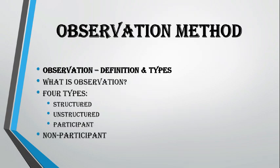Structured observation is a planned and systematic method. The researcher decides in advance what to observe, when to observe, and how to observe. Everything is organized and predetermined, just like in a structured interview. This type of observation ensures consistency and objectivity, as the researcher follows a specific format or guideline throughout the process.